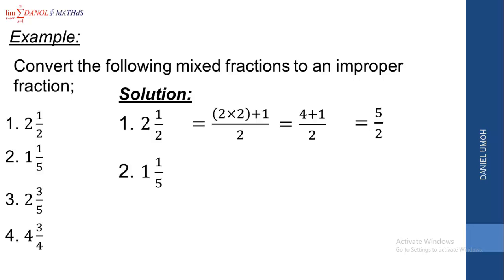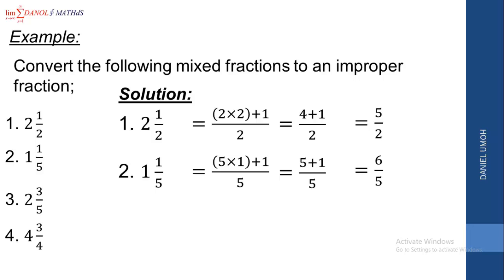Let's look at number 2: 1 whole number 1 over 5. We multiply the denominator by the whole number: 5 times 1. Then we add it to the numerator, plus 1, all over the original denominator 5. So we have 5 times 1 plus 1 over 5. Since 5 times 1 is 5, plus 1 over 5 gives us 6 over 5. So 1 whole number 1 over 5 is equal to 6 over 5.